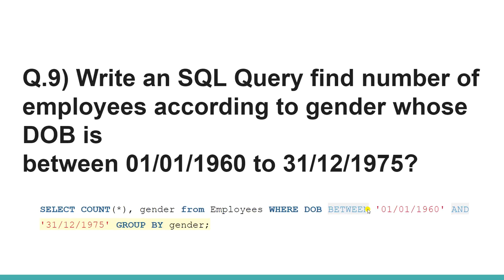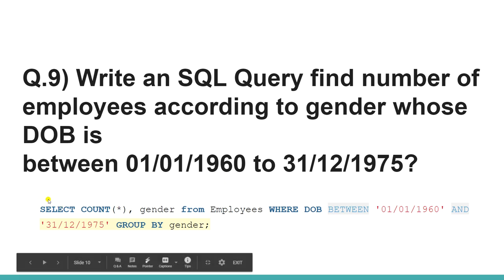The ninth question is logical: group all genders from a table and apply a date-of-birth condition between 1960 and 1975 to count how many people fall in that range per gender. You select COUNT of gender and gender, GROUP BY gender, and filter where date of birth is between those two years.